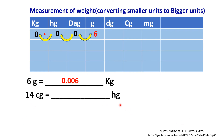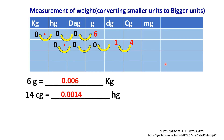Convert 14 centigram into hectogram. Write 1 and 4 starting at the centigram position. Hg is the ending point, marked with 0, and fill zeros in between. Count the jumps from cg to hg — that is 4 jumps. So move the decimal point 4 units to the left. Alternatively, count the total digits (5) and subtract 1 to get 4. Therefore, the answer is 0.0014 hectogram.